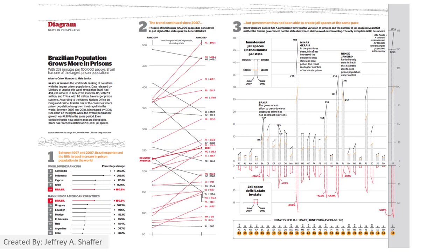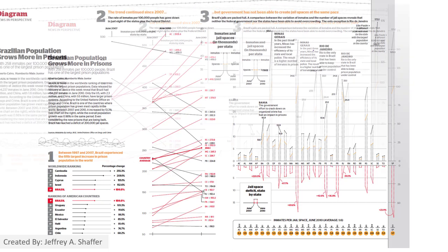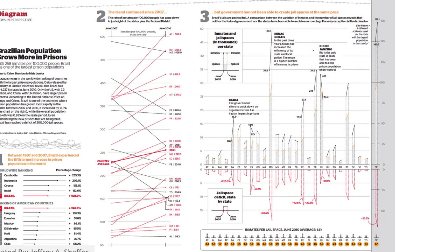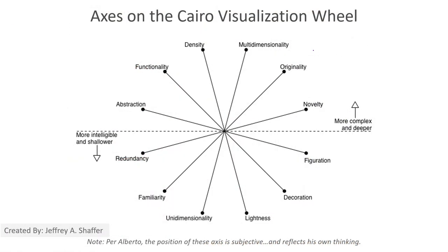This one is showing the growth in prison population. Notice the beautiful use of colors and other chart types. The author chose a slope graph from 2007 to 2010, and each line is a country. The chart on the right-hand side shows each country using those same two points in time. This is what they call the discussion axis — a visualization axis that has originality and novelty is harder to understand, but visualizations with redundancy that are familiar to the public are easier to understand.